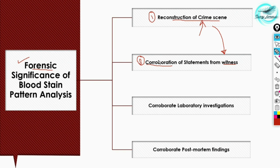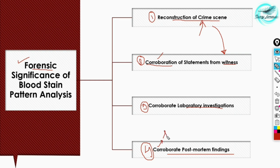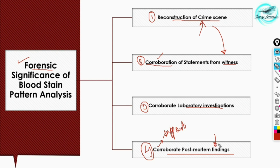The third forensic significance is the corroboration of laboratory investigations — it can provide supporting evidence for lab investigations carried out on biological fluids. The fourth is that it helps in corroboration of post-mortem findings. Crime scene bloodstain pattern analysis can help predict the kind and extent of injury that could have occurred to the victim.